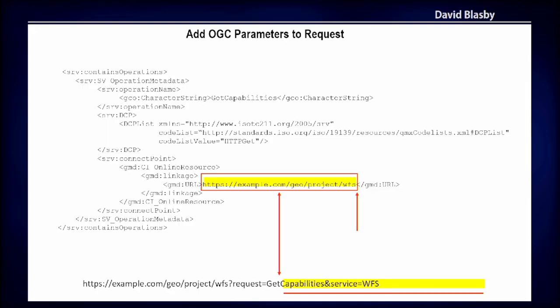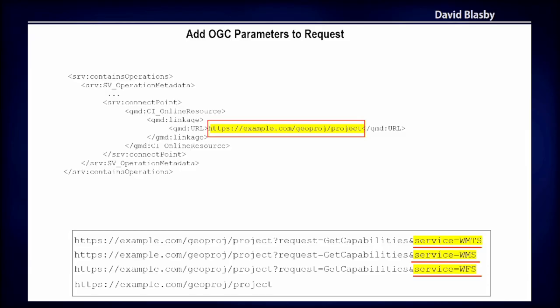Often you get a URL that just points to the endpoint of your OGC service. You have to morph that URL into a GetCapabilities request as I've shown — you need to add request=GetCapabilities, service=WFS, and also possibly a version. So far so good.